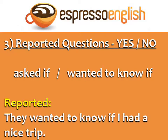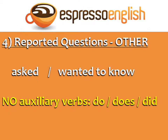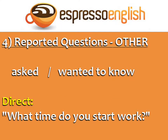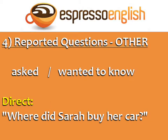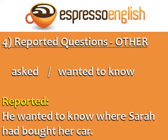To report other questions that are not yes or no questions, we use 'asked' and 'wanted to know' with no auxiliary verbs do, does, or did. Direct: 'What time do you start work?' Reported: 'He asked what time I start work' — there is no auxiliary verb 'do' in the reported question. Direct: 'Where did Sarah buy her car?' Reported: 'He wanted to know where Sarah had bought her car.' Again, there is no auxiliary verb 'did' in the reported question.